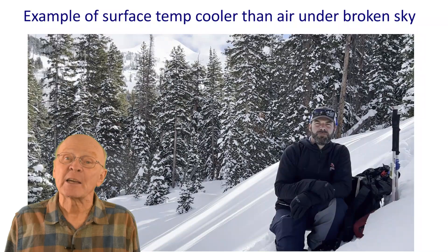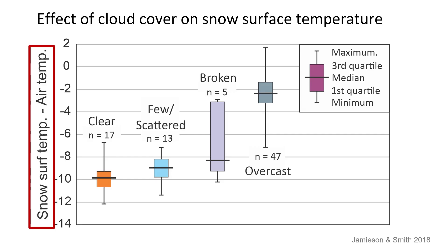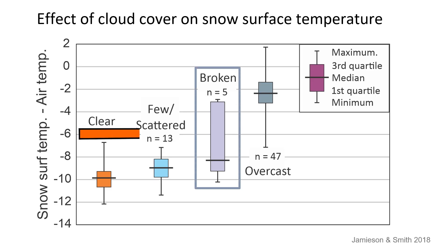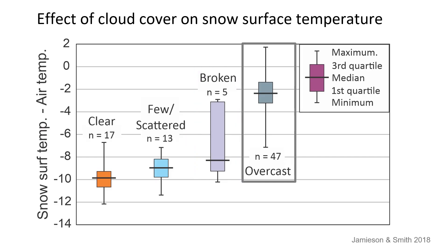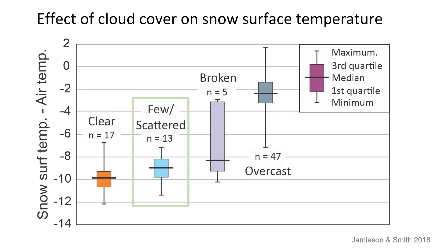Let's see how that measurement compares with an independent study. This graph shows the difference between snow surface temperature and air temperature for various levels of cloud cover. For a broken sky, the snow surface was 6 degrees cooler than the air, which is consistent with these measurements. When the sky was overcast, the snow surface averaged about 2 degrees cooler than the air, showing the net longwave radiation was typically upwards. Under clear sky, the snow surface was often about 10 degrees cooler than the air, showing the strong effect of outgoing radiation to a clear sky. With few or scattered clouds, the temperature difference generally fell between the values for clear and broken sky. However, the surface temperatures for this graph were measured in the shade, where shortwave radiation from the sun is reduced.